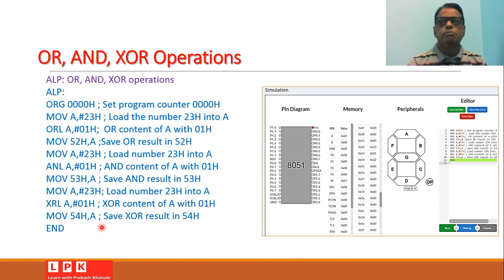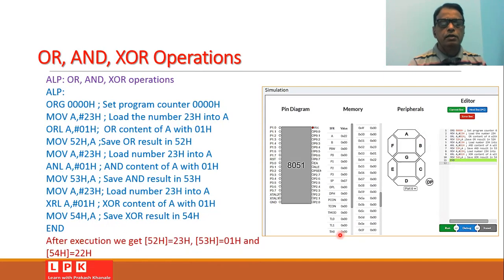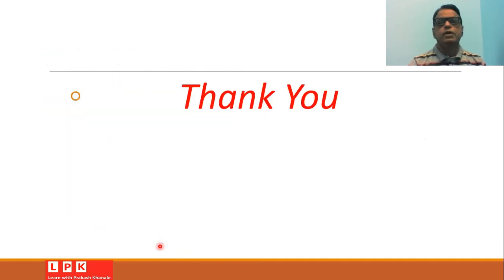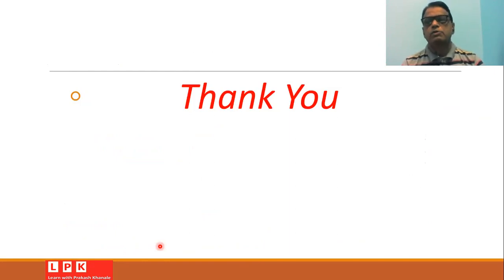When you type this program in any 8051 simulator and run it, you will get the results: location 52h equals 23h, location 53h equals 01h, and location 54h equals 22h. You can observe these results at the respective memory locations in the simulator window. Thank you friends — hopefully you have now understood and are able to write assembly language programs for the 8051 microcontroller unit.